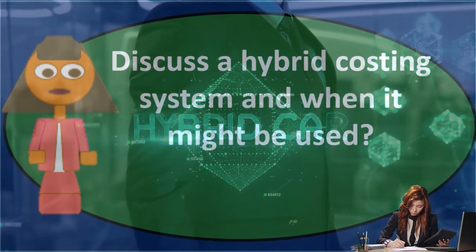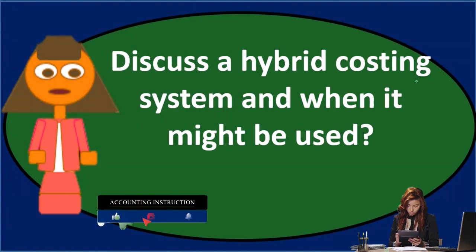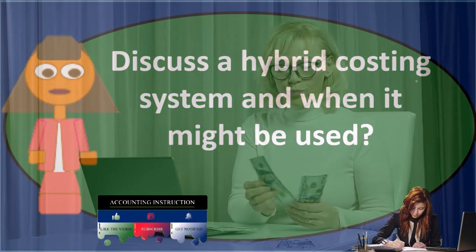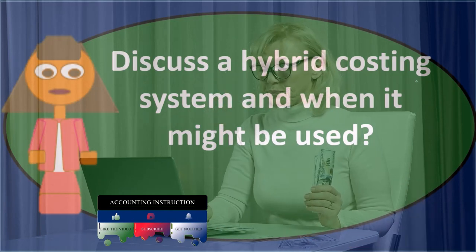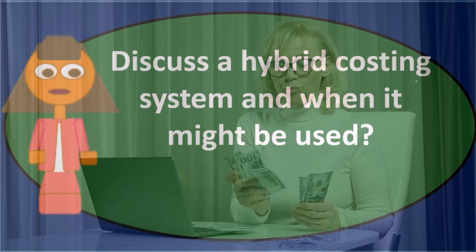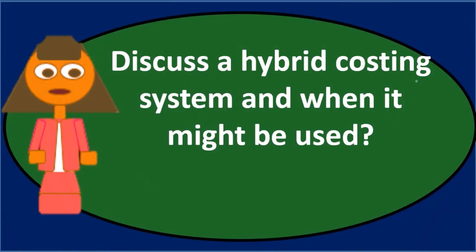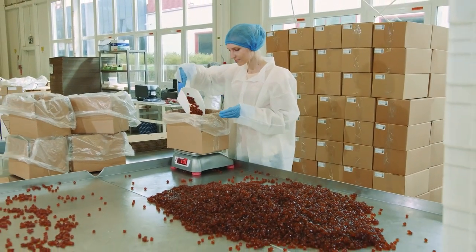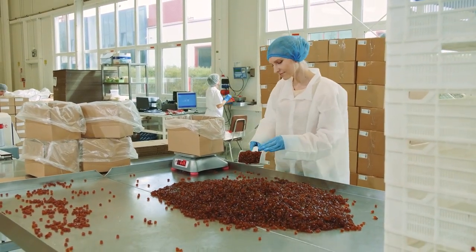We have the job cost system and the process cost system as the two major types. The job cost system is typically used when we have different types of inventory that are totally different in nature, and therefore we track that inventory by particular job. The process cost system is typically used when we're making a lot of things that are all the same in nature, so we can mass produce those items and track things not by job but by process.